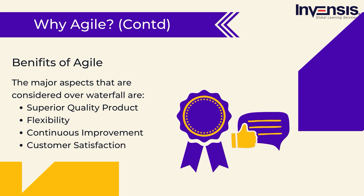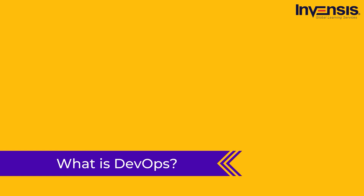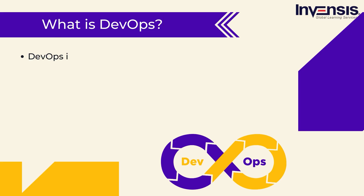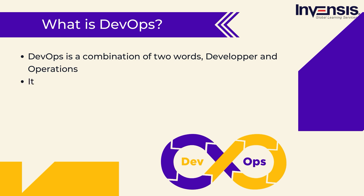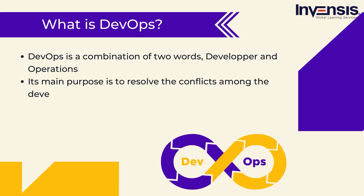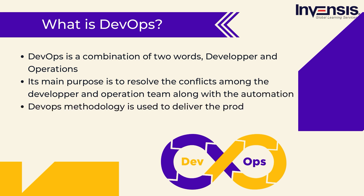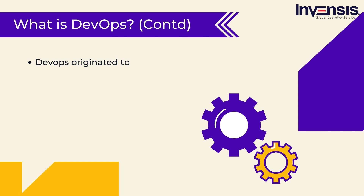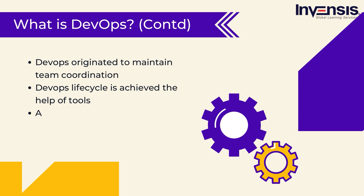Now let us start with the introduction to DevOps and the need for it. DevOps is a combination of two words — developer and operations — and its main purpose is to resolve conflicts among the developer and operations team, along with automation. This methodology is used mostly in the current-day industry to deliver the product continuously and get regular feedback for rectification. DevOps originated to maintain team coordination between the developer and the operations team with automation, drawing from the drawbacks of the Waterfall, Agile, and Lean models.